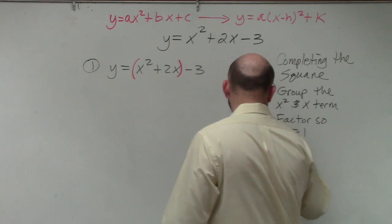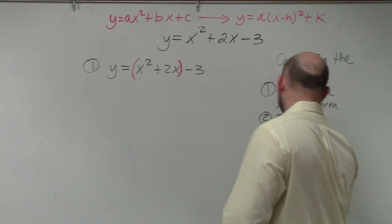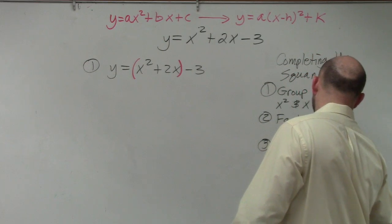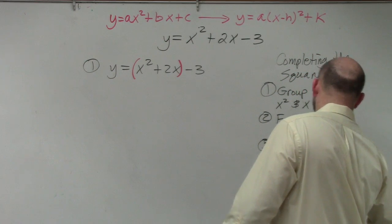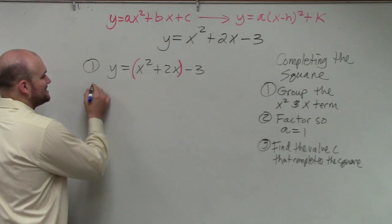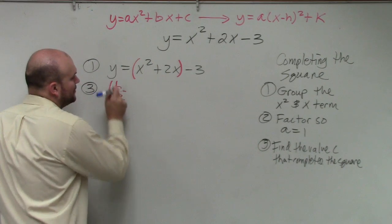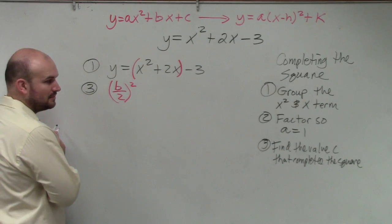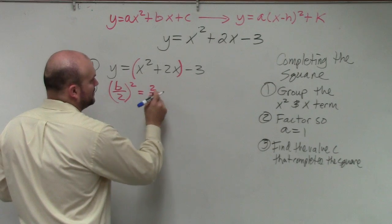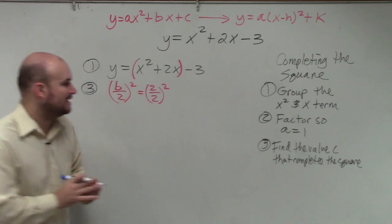Step number three: find the value c that completes the square. Do you guys remember this from your homework? Step number three is basically your homework. You're going to take b divided by 2 and square it. So in this case, we have 2 divided by 2 squared. 2 divided by 2 is 1, and 1 squared is 1.